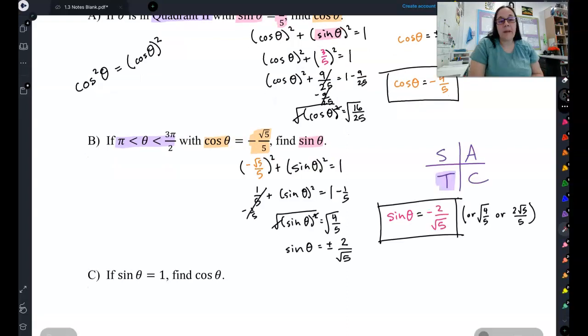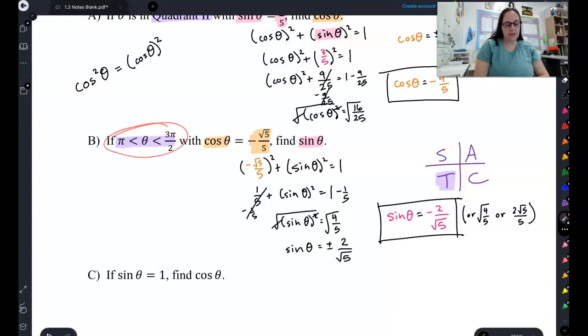So, I started by plugging everything into the Pythagorean identity. I got sine is plus or minus 2 over square root of 5. Just so you know, 2 over square root of 5 is the same thing as square root of 4 fifths. It is also the same thing as 2 square roots of 5 over 5. So, any of those that you got are actually identical. Now, I know this is in the third quadrant from pi to 3 pi halves. So, that's here, which means tangent is positive. Everything else is negative. So, I picked the negative one.